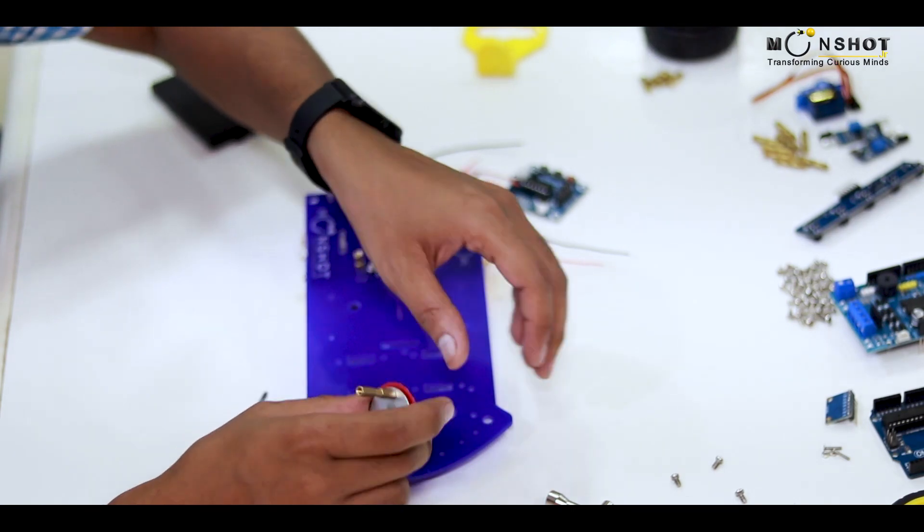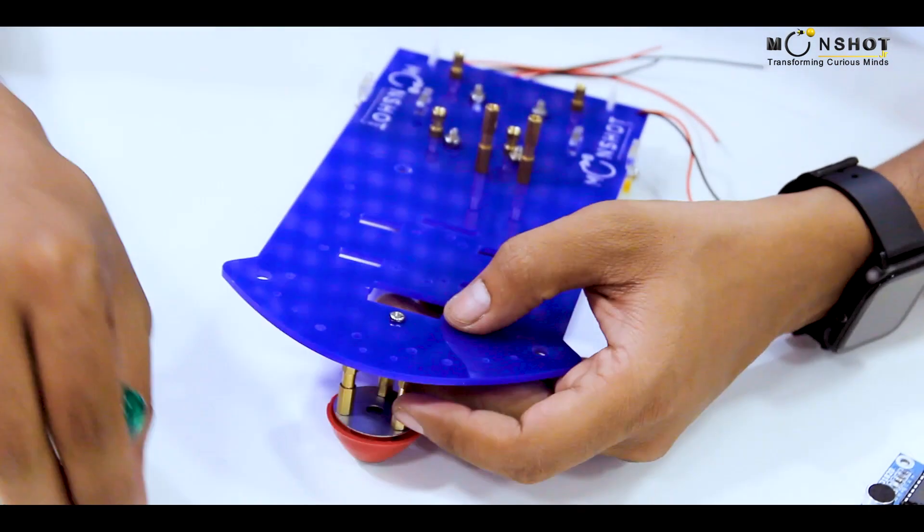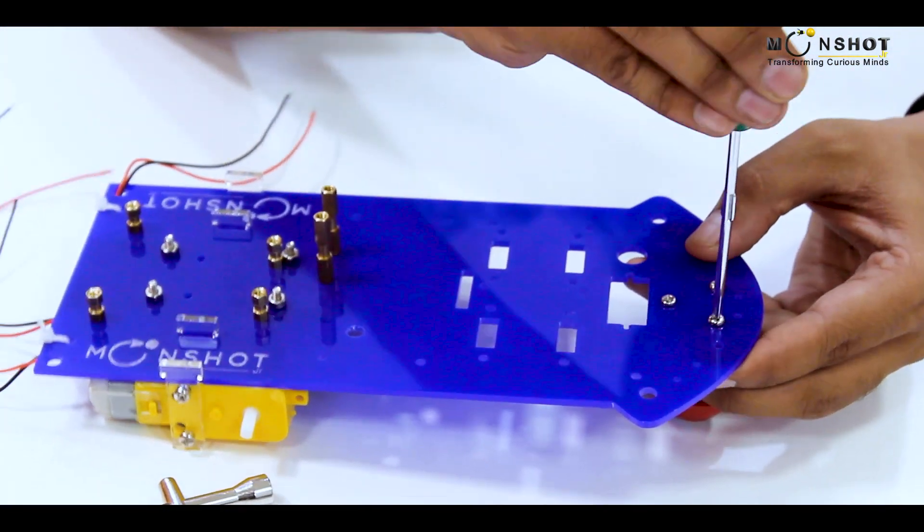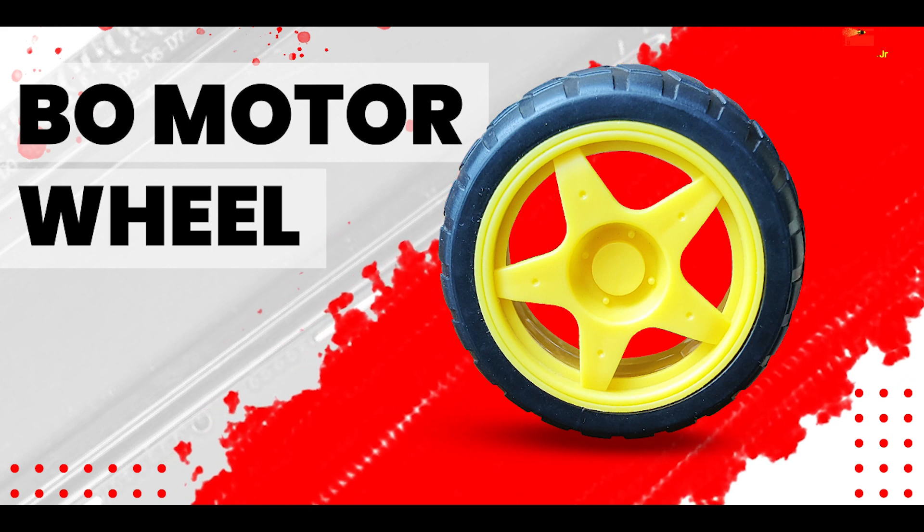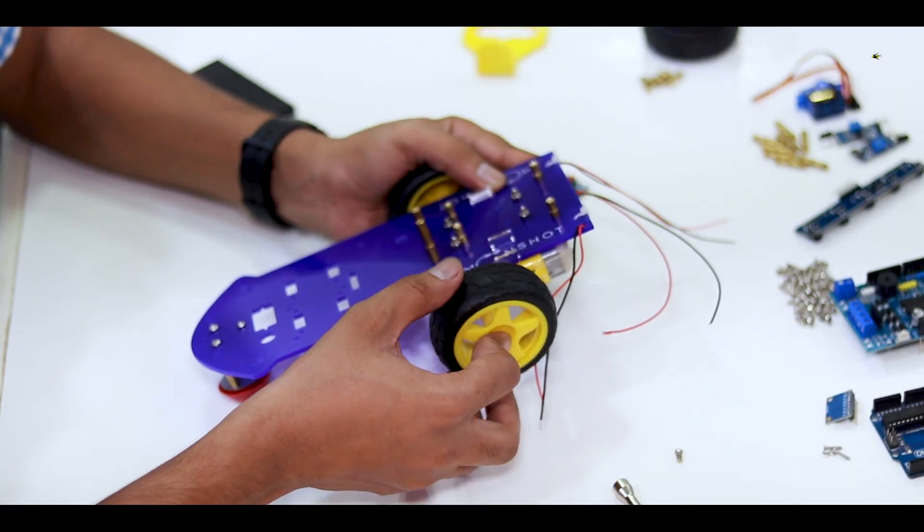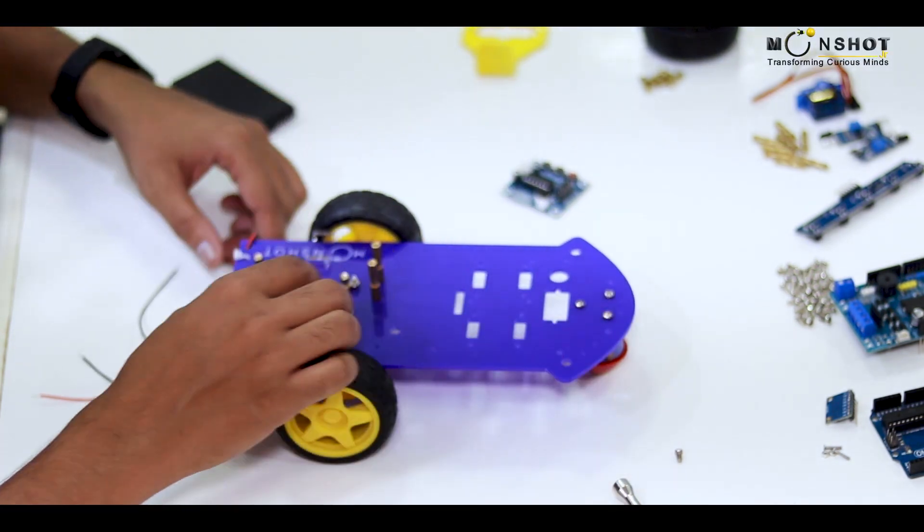After this, we are going to add caster wheels to it. BO Motor Wheel. Now we are going to place our BO motor wheels alongside the BO motor like this.